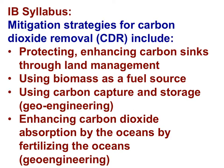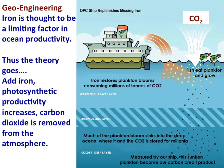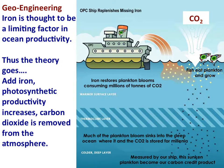Lastly, mitigation strategies for carbon dioxide removal include enhancing carbon dioxide absorption by the oceans by fertilizing the oceans. Iron is thought to be a limiting factor in ocean productivity. Thus, the theory behind this mitigation strategy goes: add iron, photosynthetic productivity increases, carbon dioxide is removed from the atmosphere. The iron acts like a fertilizer, stimulating the productivity of the phytoplankton. When the phytoplankton die, they sink to the bottom, sequestering carbon deep in the ocean.